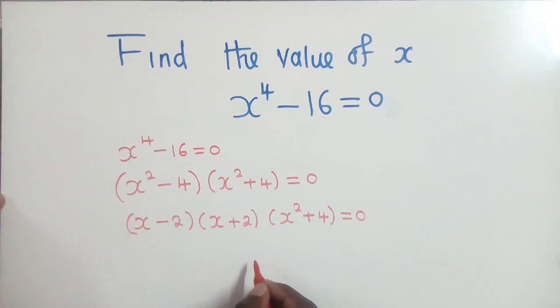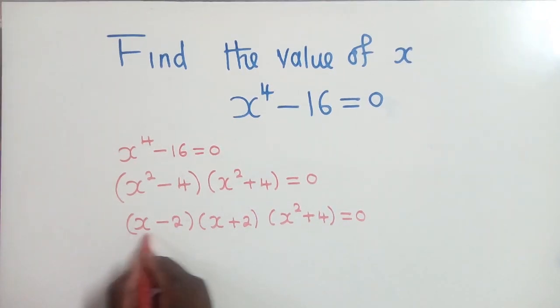Okay. Thereafter, we equate this equal to 0, this equal to 0, and this equal to 0.